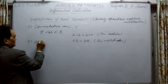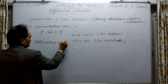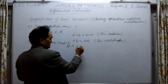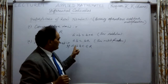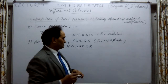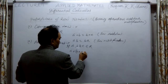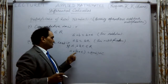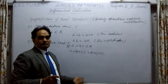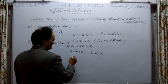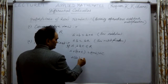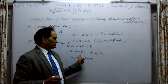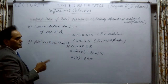The second property is the associative law. If A, B, and C belong to R, then (A + B) + C = A + (B + C). Whether I add the first two numbers then the third, or the last two and then the first, the result is the same. This is for addition. For multiplication: (A × B) × C = A × (B × C).